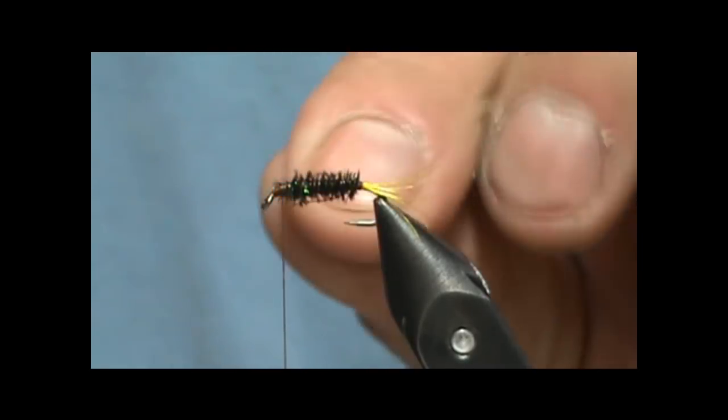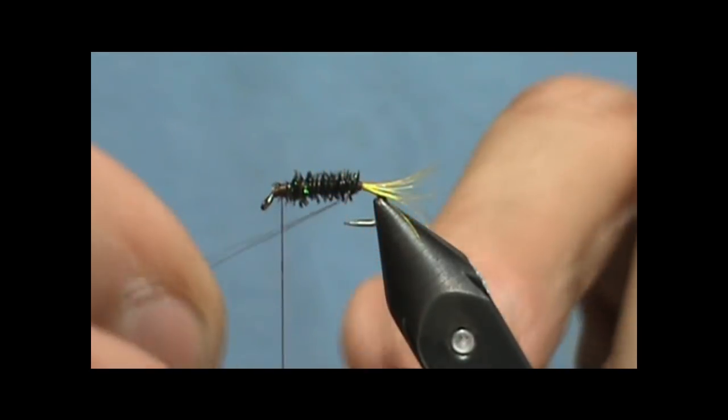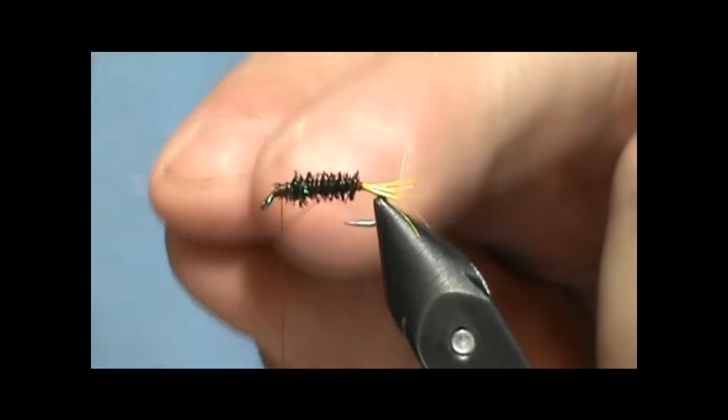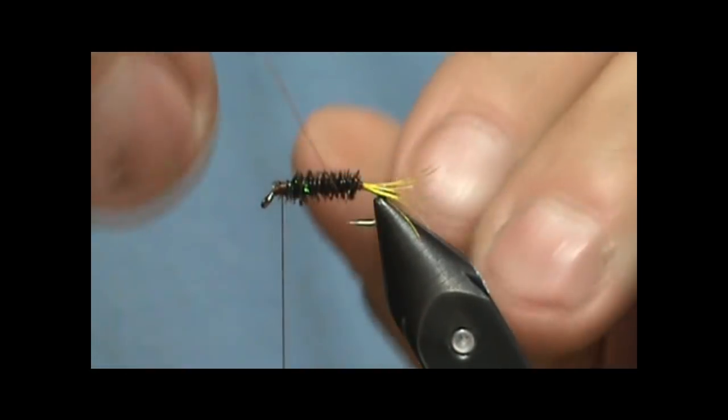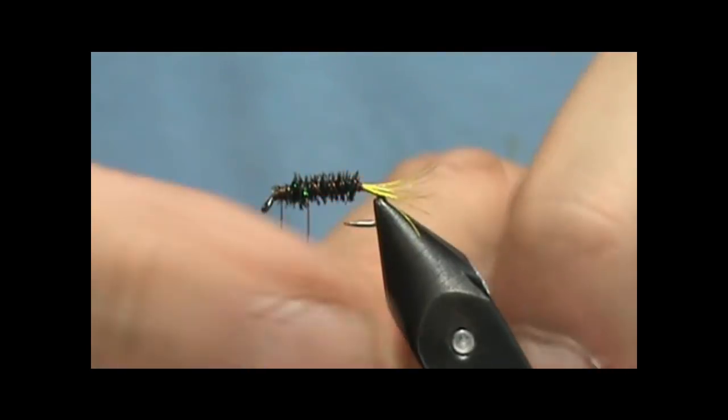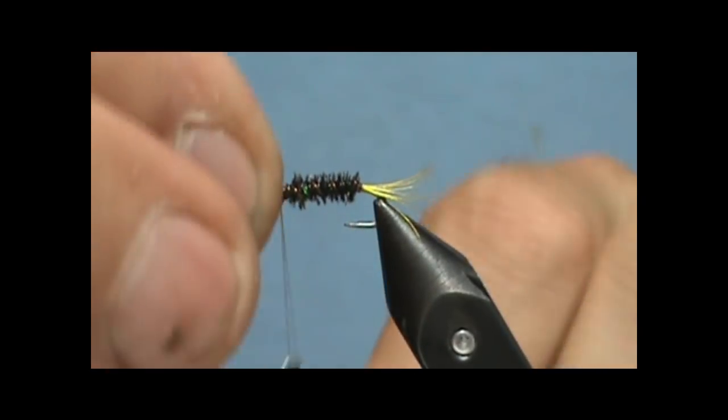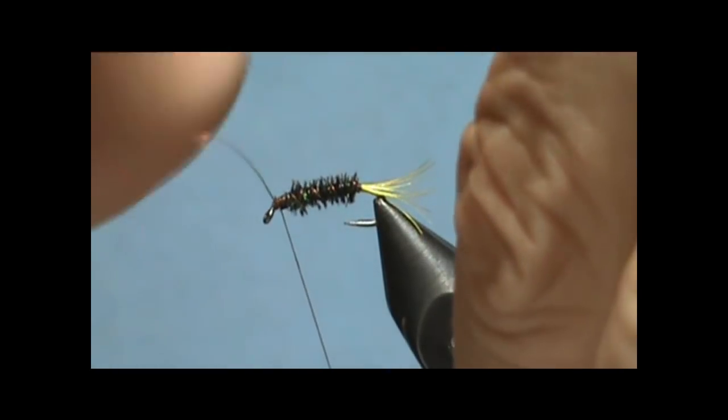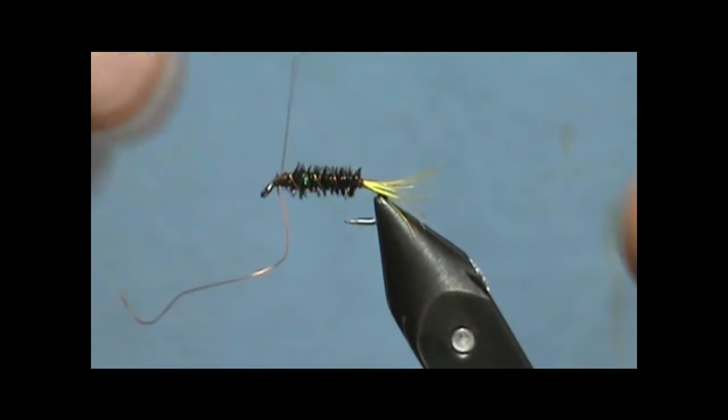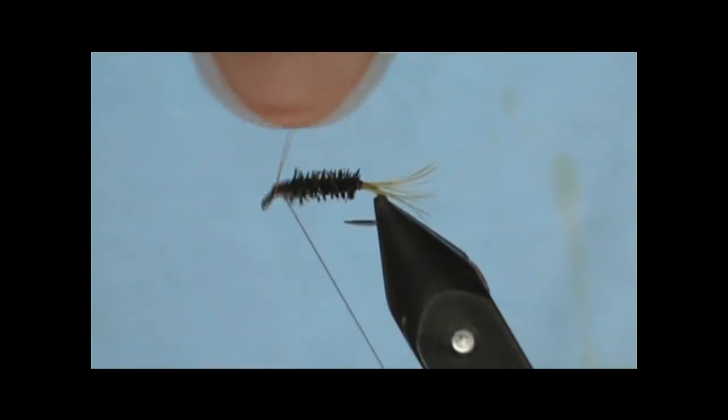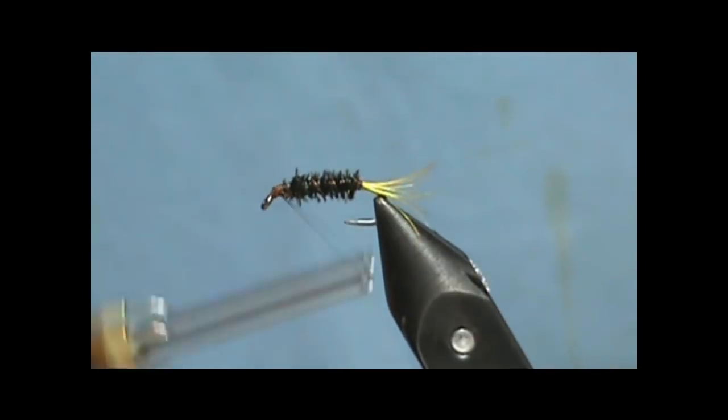Now we're going to take that rib and we're going to counter wrap it, going in the opposite direction that we wrapped our peacock hurl. And we're going to tie that in. Go ahead and break that off. Helicopter it. Extra fine breaks pretty easily.